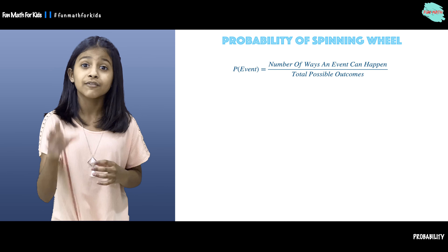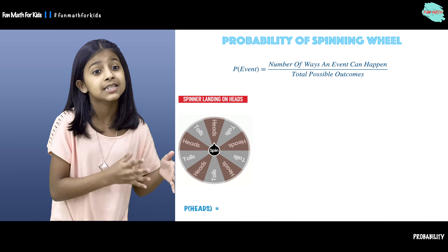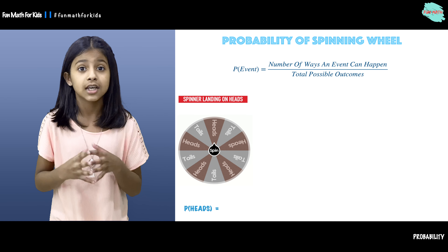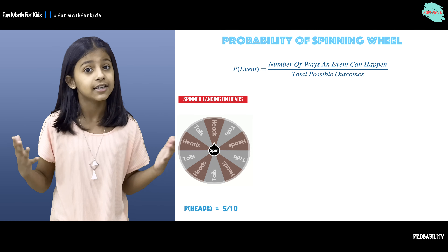Now let's talk about a few examples. The first example is: what is the probability of the spinner landing on heads? Here we have a spinner and the spinner has 5 heads and 5 tails, and a total of 10 possible outcomes. The probability of the spinner landing on heads is 5 over 10, because there are 5 total possible outcomes of the spinner landing on heads and 10 total possible outcomes.